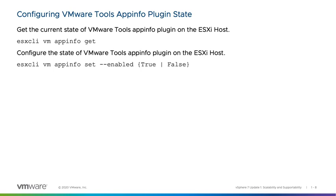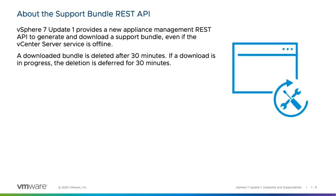vSphere 7 introduces a new Appliance Management REST API used to generate and download a support bundle, even if the vCenter Server service is offline. A downloaded bundle is automatically deleted after 30 minutes; if the download is still in progress, deletion will be deferred for another 30 minutes. You can still use existing methods to generate a support bundle using vSphere Log Insight, the vSphere Client, SSH, and the vCenter Server Appliance Management Interface.